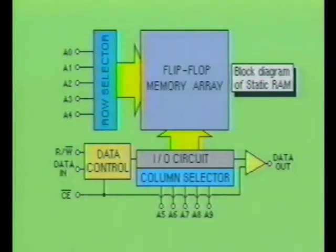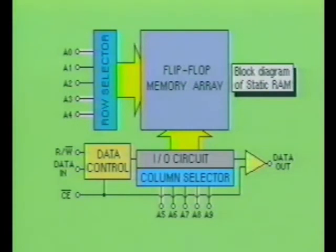Reading data from the RAM device is not a complex operation. First, the desired address is selected. Next, the chip-enable input, not CE, is brought low. After a very short period of time, the data at the selected address will be present at the output. As you may have noticed, there is only one data output on this device.